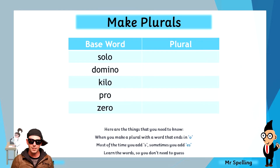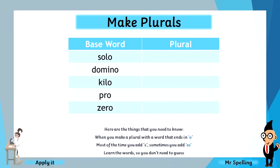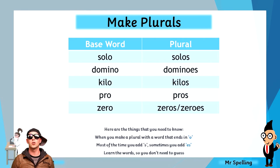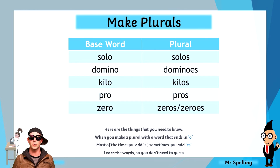One more time — it is your turn once again. Here are five more words. Can you make plurals as the music plays? You can pause the video if you need more time. The words are solo, domino, kilo, pro, and zero. Solo becomes solos, just with an S. Dominoes is one of our words that's always spelt with an ES. Kilo is a shortened word, so it becomes kilos. Pro is a shortened word, so it becomes pros. And zero is one of the words where both versions are acceptable, so it becomes zeros or zeroes with an S or ES.